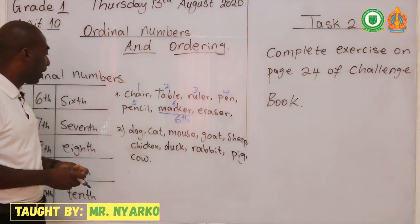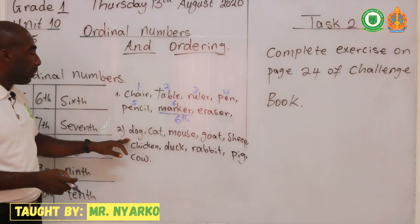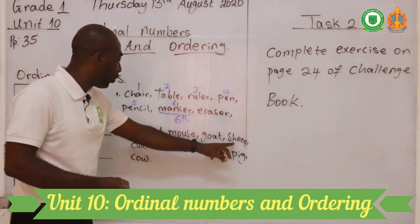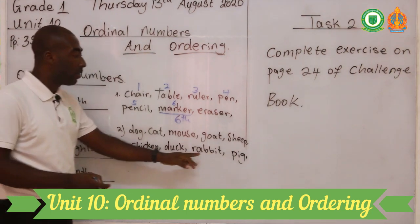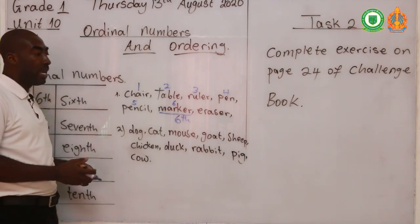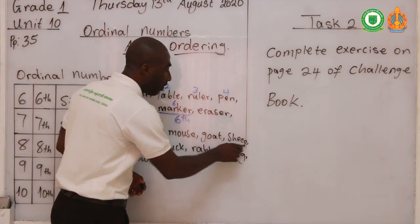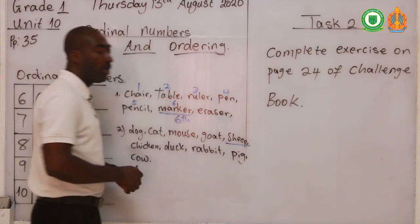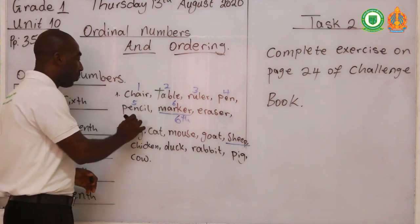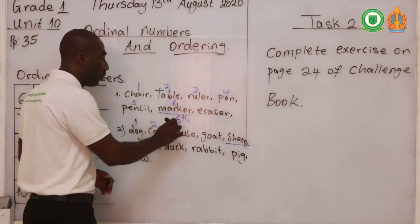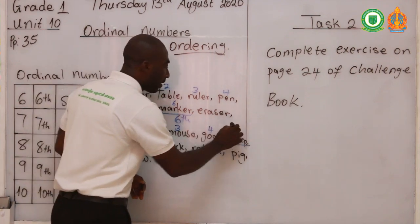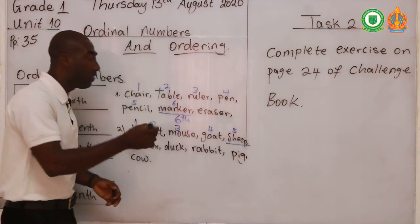Now for the second example: dog, cat, mouse, goat, sheep, chicken, duck, rabbit, pig, and cow. Let's find the position of sheep. We start counting: one, two, three, four — this is five. So sheep is on number five, meaning the ordinal number is fifth.